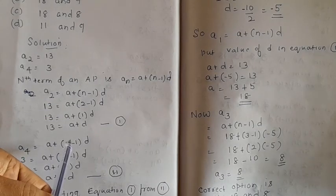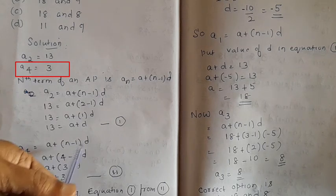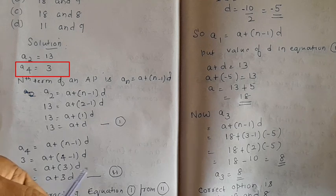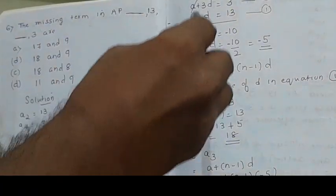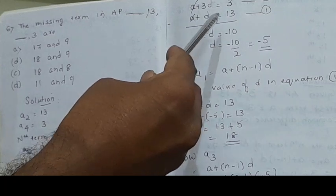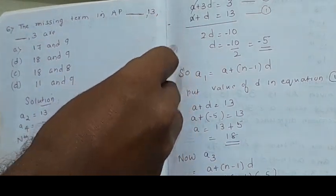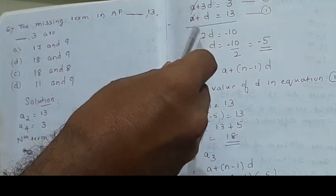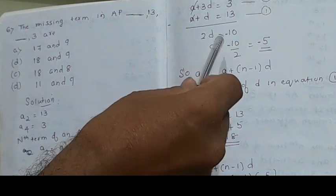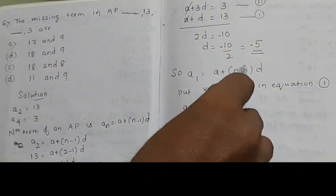For the 4th term: a4 = a + (4-1)d = a + 3d, so 3 = a + 3d. That is equation 2. Now subtract equation 1 from equation 2: (a + 3d) - (a + d) = 3 - 13. The 'a' terms cancel, leaving 3d - d = 2d = -10, so d = -10/2 = -5. We have found the value of d, which is -5.